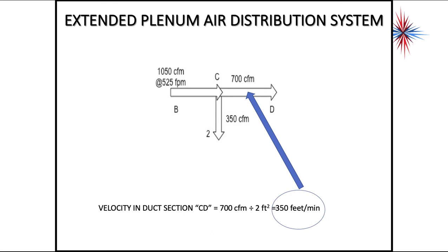Here, velocity in section C to D, we now are only left with 700 CFM, because we've taken off the 350. So 1,050 minus 350, I only have 700 CFM. So here, we have 700 CFM divided by the 2 square feet gives me a velocity of 350 feet per minute.